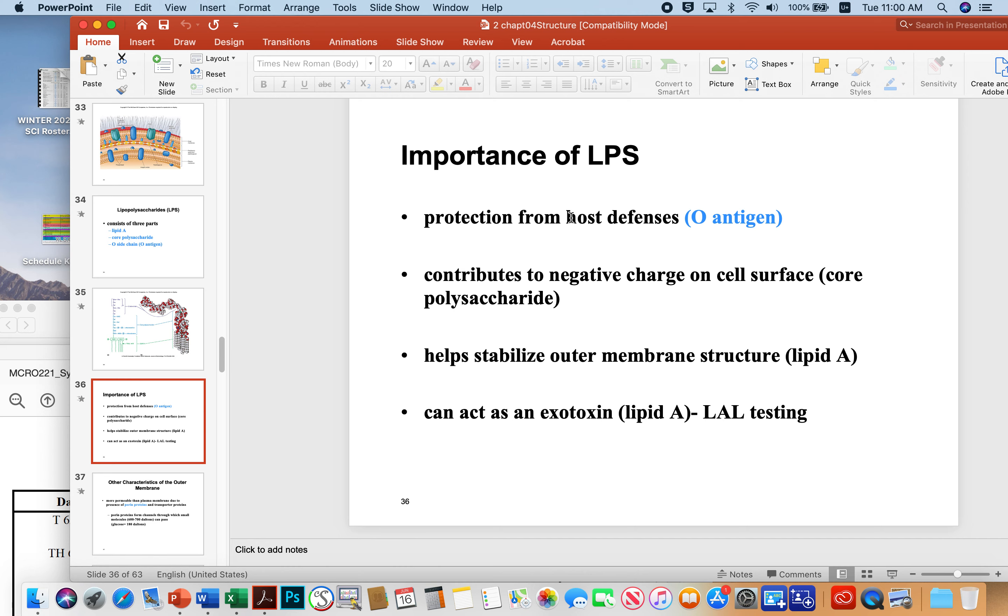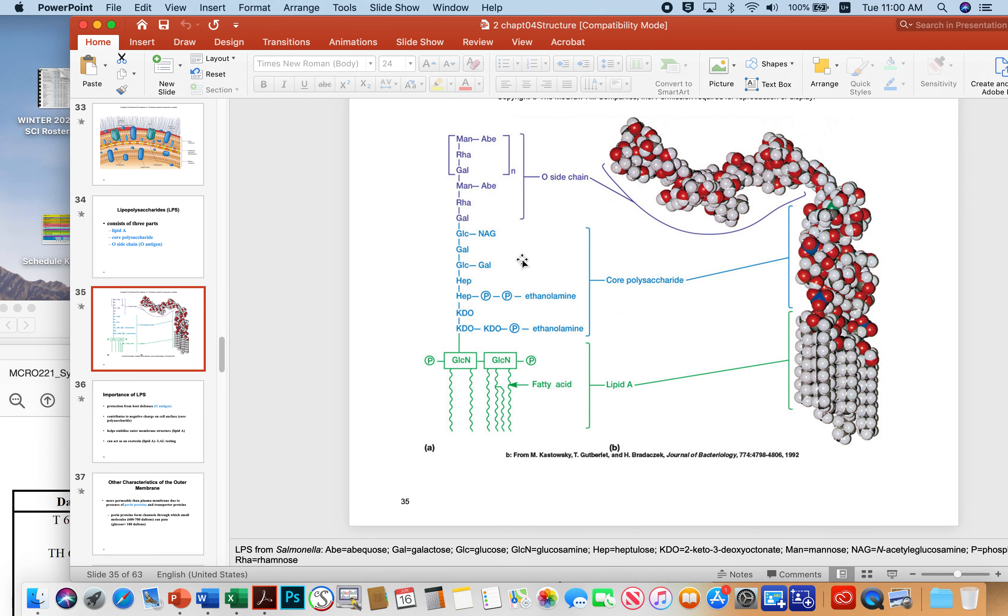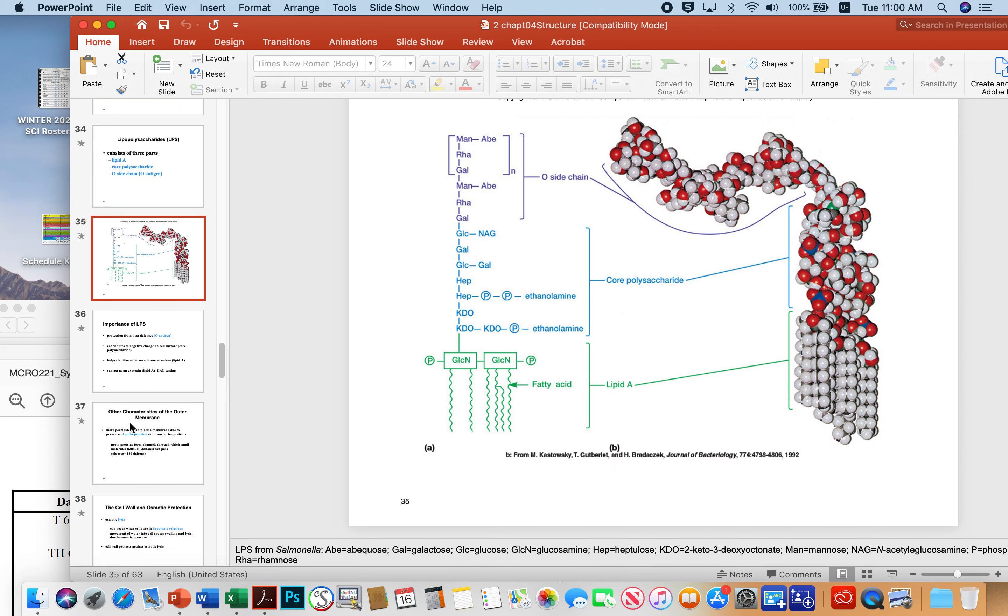The importance is that it protects the cell from host defenses. One of the things that the microbe can do is modify the sugars in its O antigen and confuse the host immune response. Another thing is it contributes negative charge to the cell surface. Things that are negatively charged can be repelled by the negative charge on the surface. And obviously it helps stabilize the outer membrane because it's a physical part. But the other thing that it can do is act as a toxin. Microbes can actually slough this component, this piece off of their cell and cause toxic effects, just like I mentioned previously where pieces of the cell wall can slough off and cause toxic reactions in hosts.